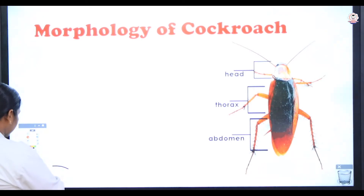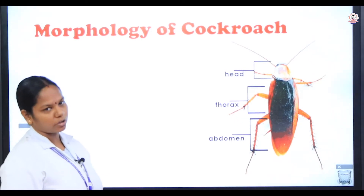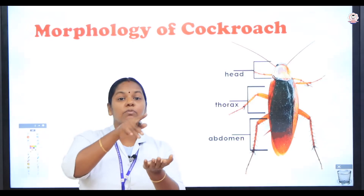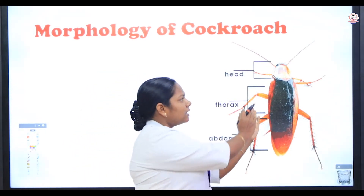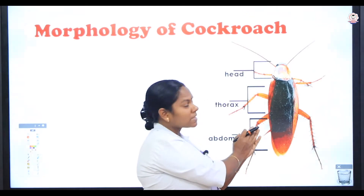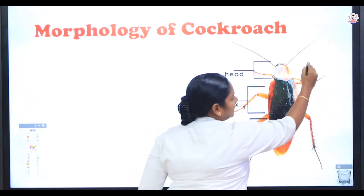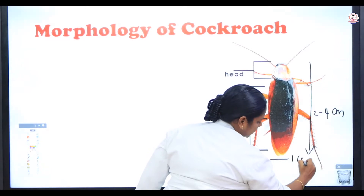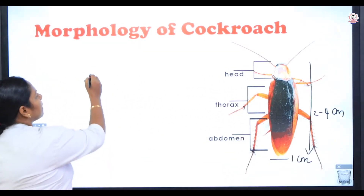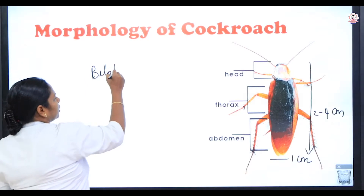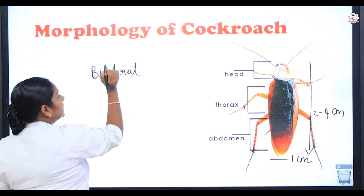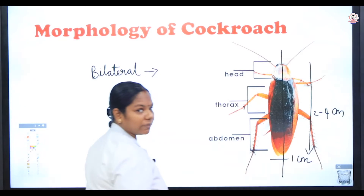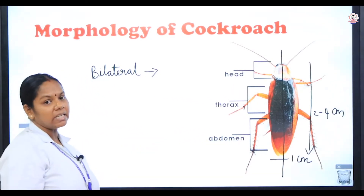Now let us see some important characteristic features of the cockroach. The body is dorso-ventrally flattened — it is flattened both on the upper and lower sides. The length of the adult cockroach is 2 to 4 centimeters and the width is 1 centimeter. The cockroach is bilaterally symmetrical. If an organism is divisible into two equal parts from only one plane, we say the organism is bilaterally symmetrical.